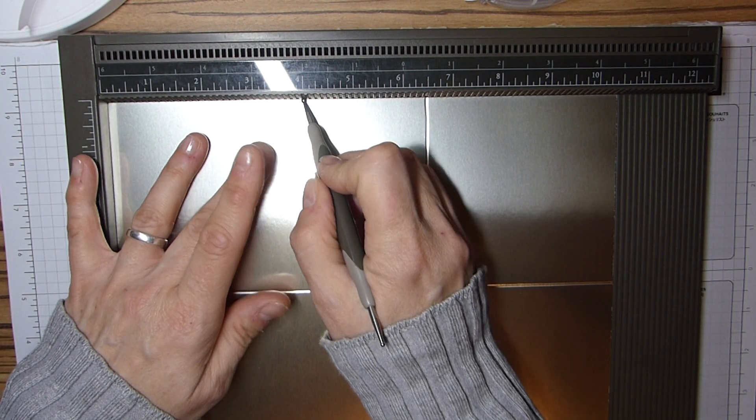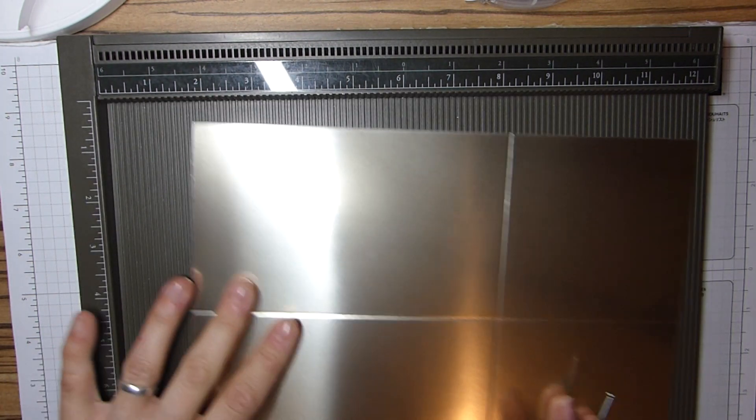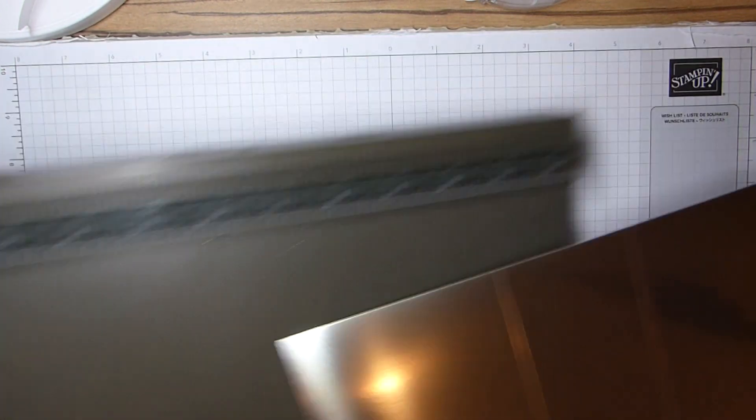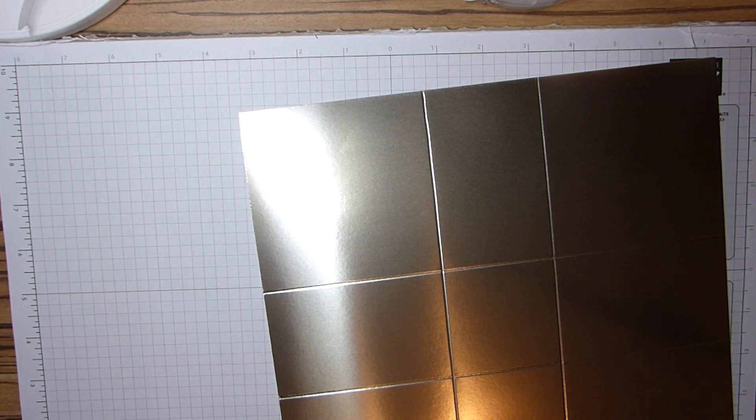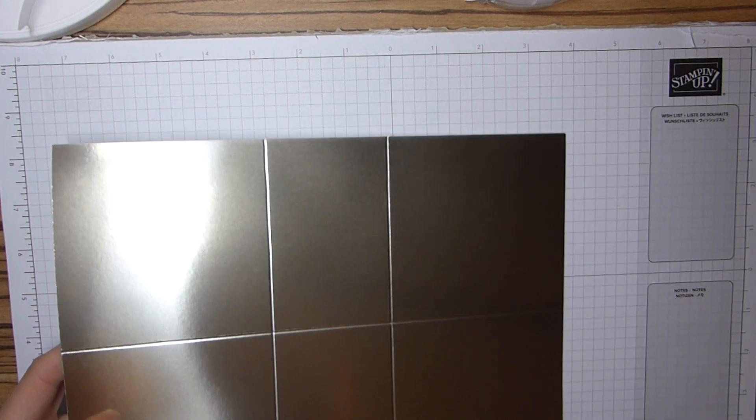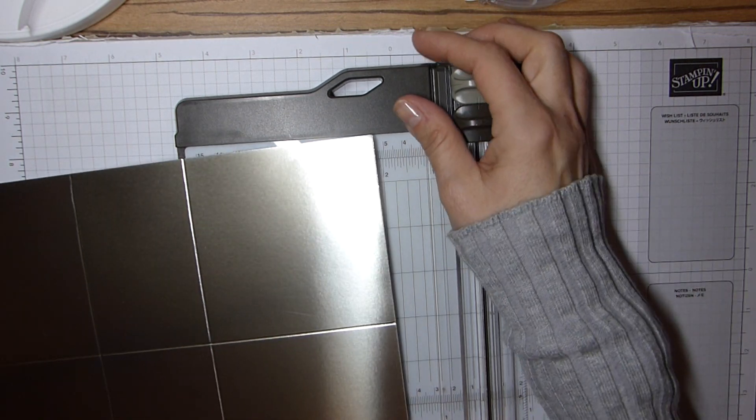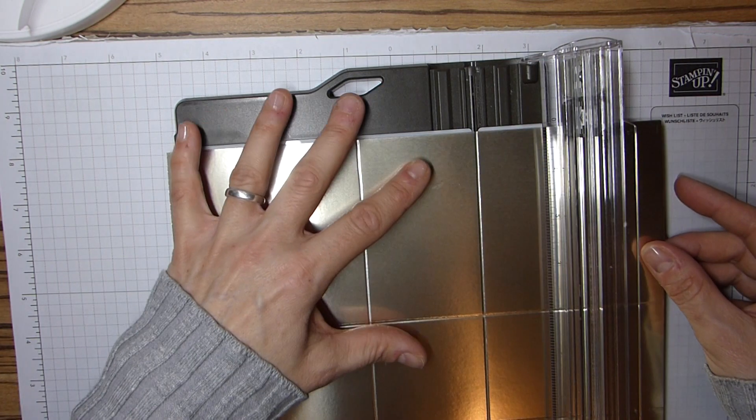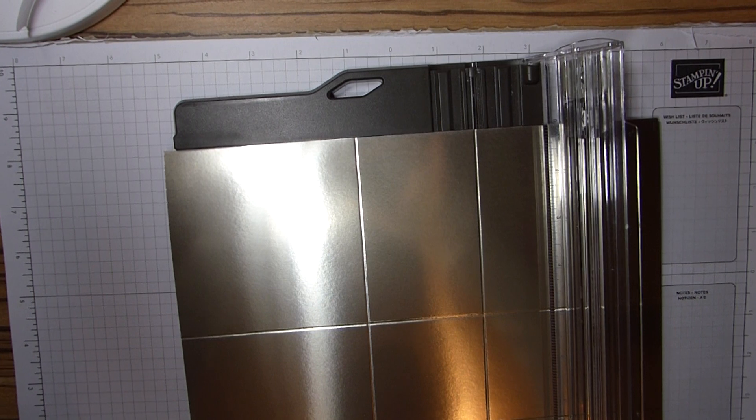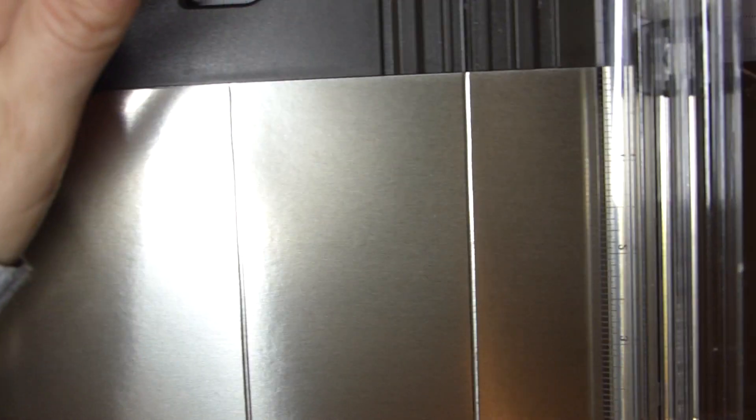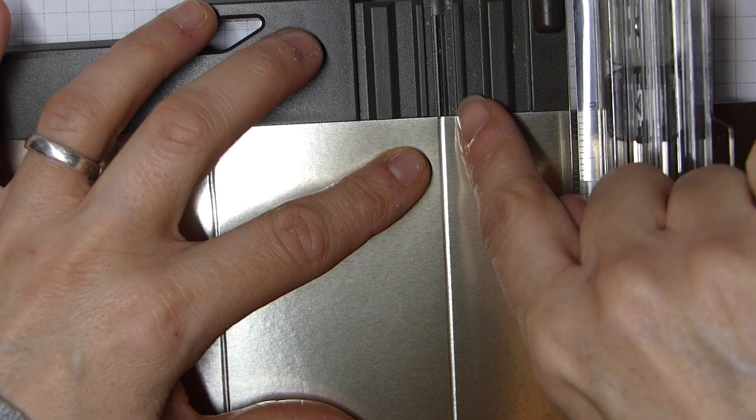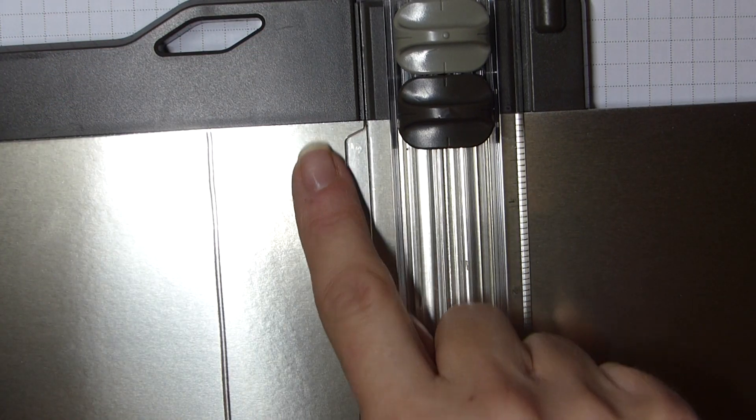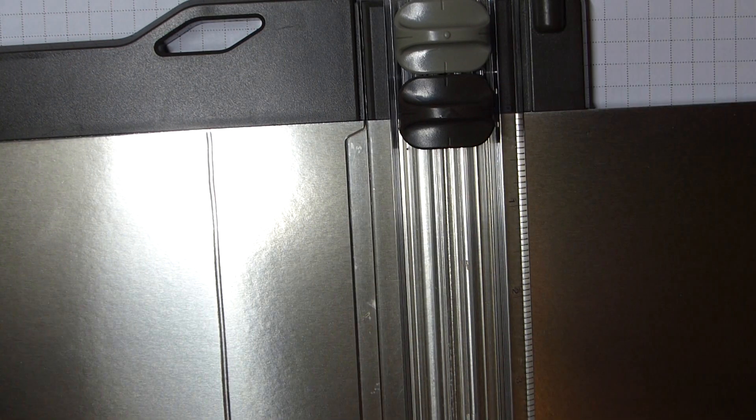It's just so beautiful. You can see how easily it just scores. So that's that part done. Now I'm not going to fold and burnish this at the moment because what I'm going to do is I want to use my trimmer because I want my edges to be really smart and smooth. So I'm going to line my score line up with the groove of my trimmer.